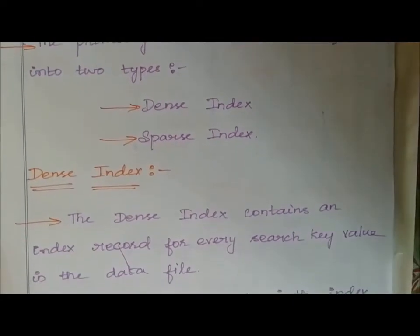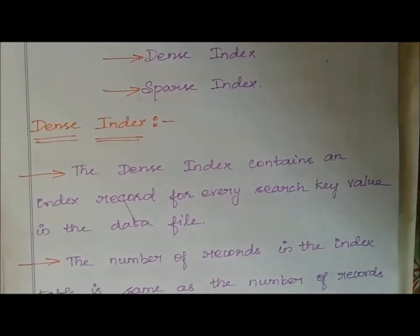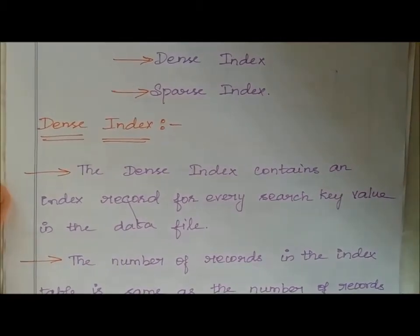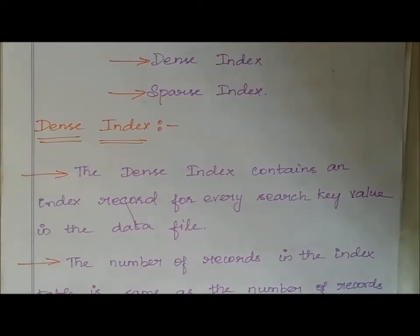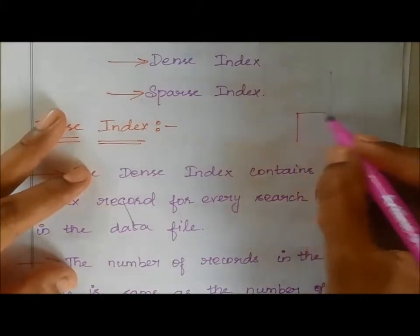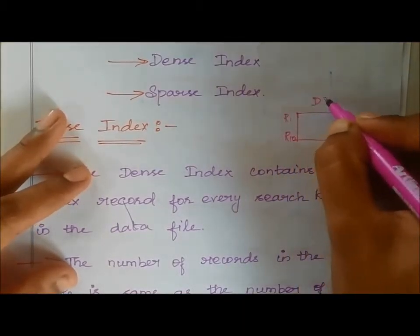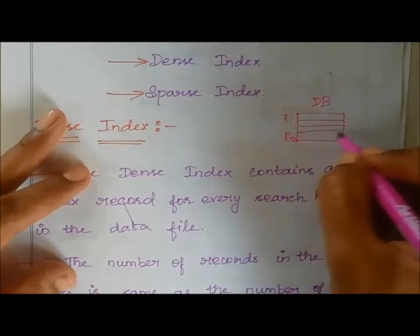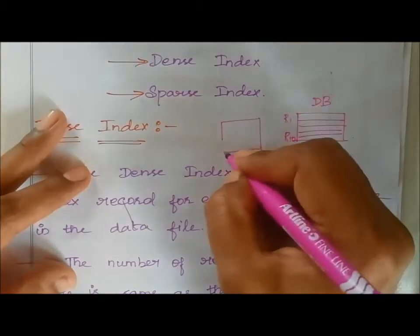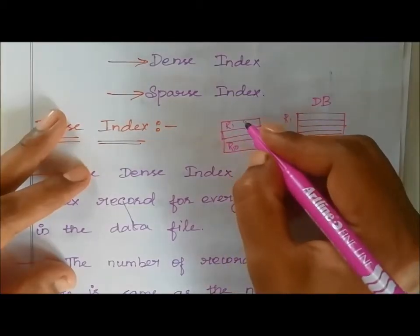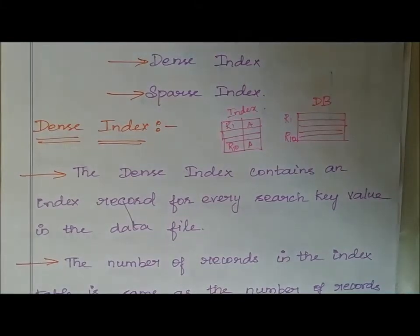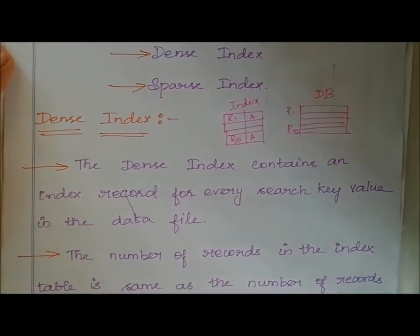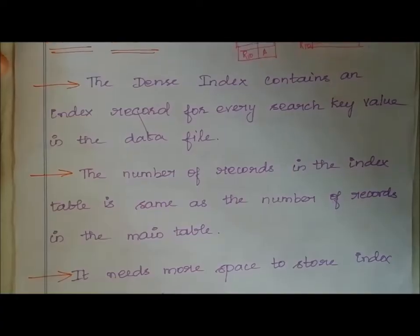Let's see what dense index is. The dense index contains an index record for every search key value in the data table. For every record we store in data blocks, we create an index. For example, if we have 10 records R1 to R10 in data blocks in secondary memory, then we store indexing for all 10 records R1 to R10 — with the search key and address for each. That type of index is a dense index.